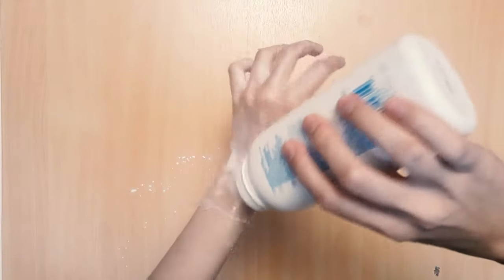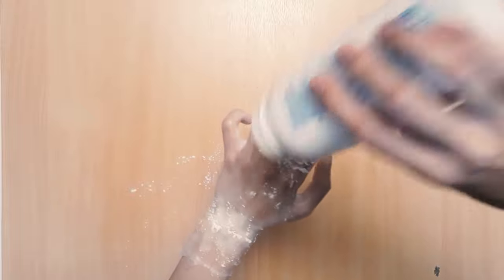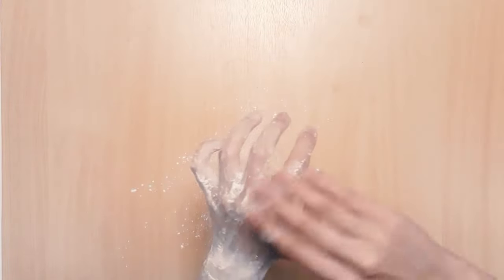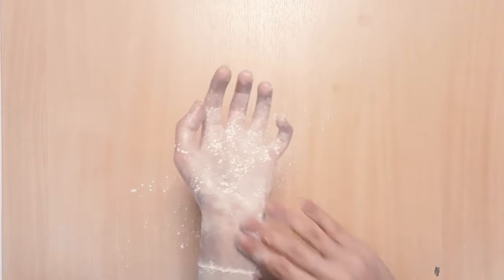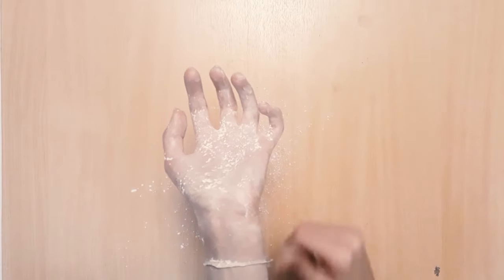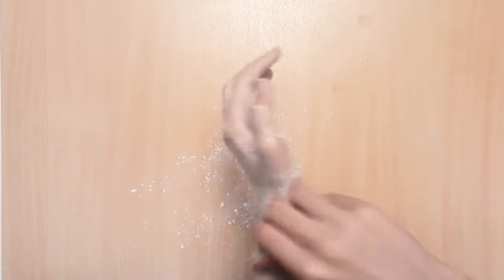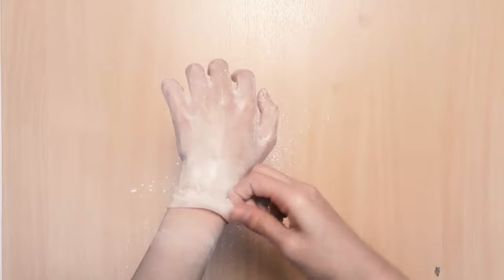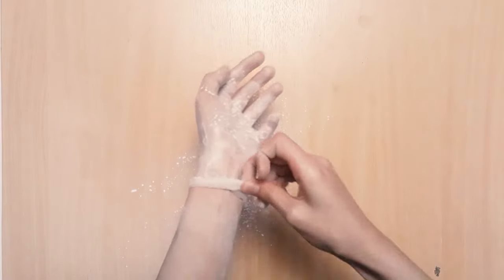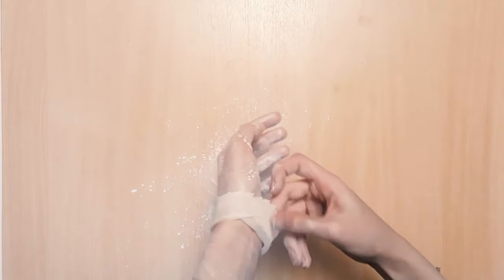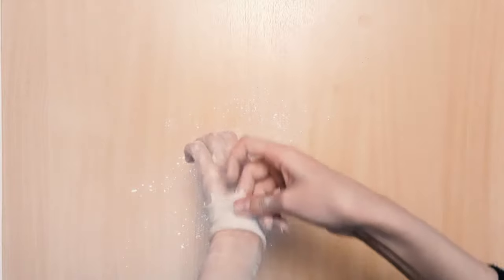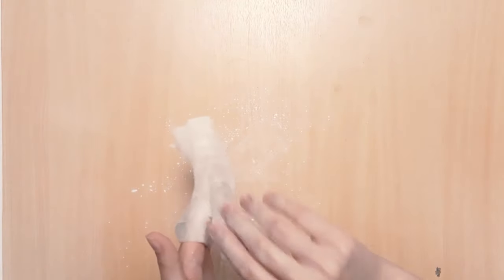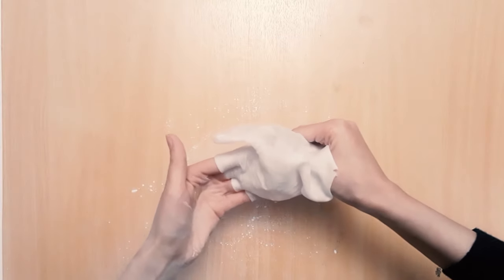For taking off the hand, you're gonna need some sort of powder. I'm gonna use baby powder, but I guess using flour would be fine as well. And I'm gonna cover all over my hand, and then slowly and gently start peeling it off from the bottom. You need to take your time with this to avoid tears as much as possible, and keep adding more powder as you go. We do this to avoid the hand from sticking to itself.